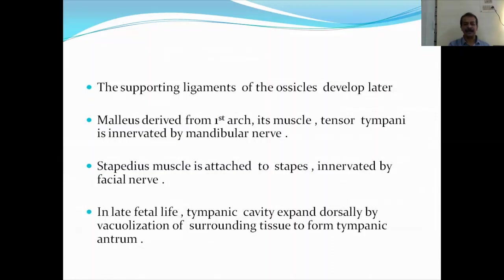The malleus is derived from the first arch. Its muscle — the tensor tympani muscle — is innervated by the mandibular nerve, a branch of the trigeminal nerve. The stapedius muscle, as it is derived from the second arch and is attached to the stapes, is innervated by the facial nerve.